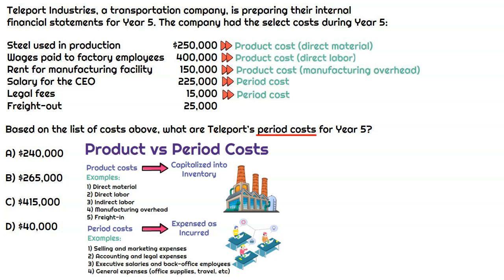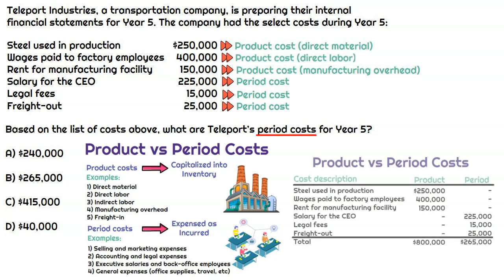The last cost is freight out, and this is one students always get tripped up on. Freight in — paying to ship materials to the warehouse to use in production — is a product cost. But freight out means we're sending it to a retailer, distributor, or customer. Freight out is a selling expense, expensed as incurred, so it's a period cost. In our table, product costs total $800,000 and period costs total $265,000. Since the question only asks about period costs, the correct answer is $265,000.